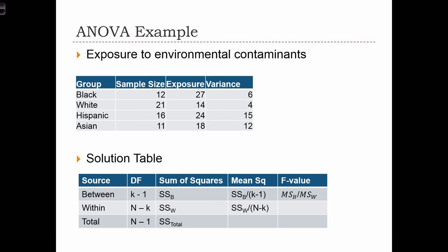This is another example of how to apply an F-test to a one-way ANOVA. In this example, we're looking for racial inequalities in exposure to environmental contaminants.